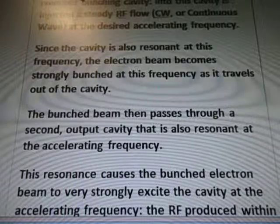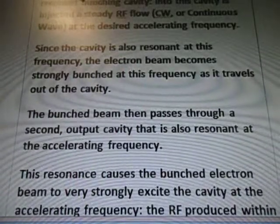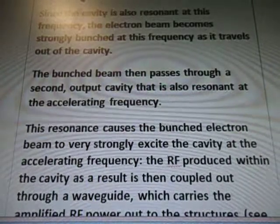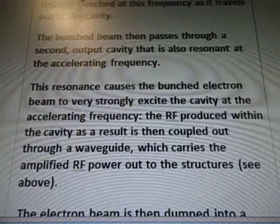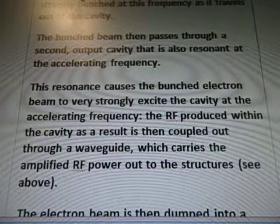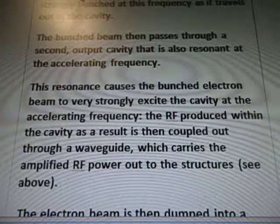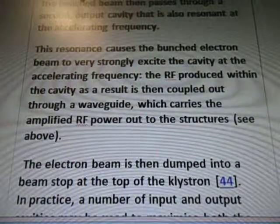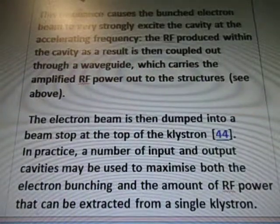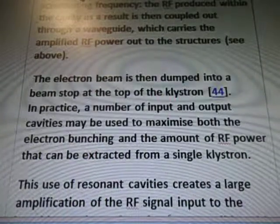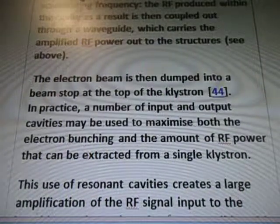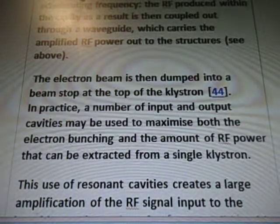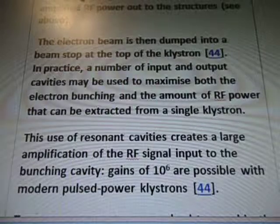The bunched beam then passes through a second output cavity that is also resonant at the accelerating frequency. This resonance causes the bunched electron beam to very strongly excite the cavity at the accelerating frequency. The RF produced within the cavity is then coupled out through a waveguide, which carries the amplified RF power out to the structure. The electron beam is then dumped into a beam stop at the top of the klystron. In practice, the number of input and output cavities may be used to maximize both the electron bunching and the amount of RF power that can be extracted from a single klystron.